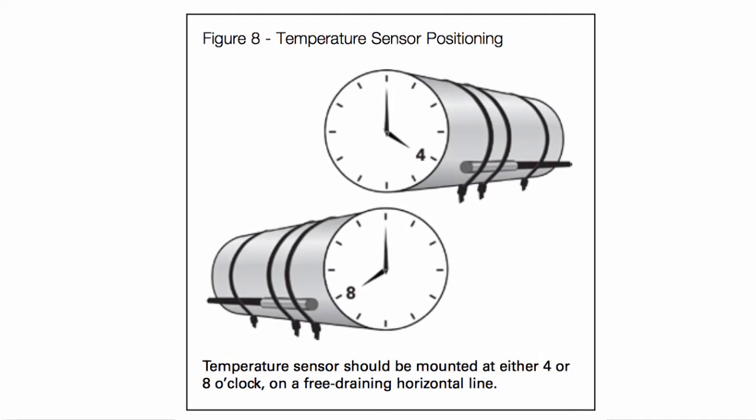So before mounting the temperature sensor, use Scotch Bright to clean the copper line at the installation location, and fasten the sensor at either 4 or 8 o'clock on a free draining horizontal line as shown in figure 8.